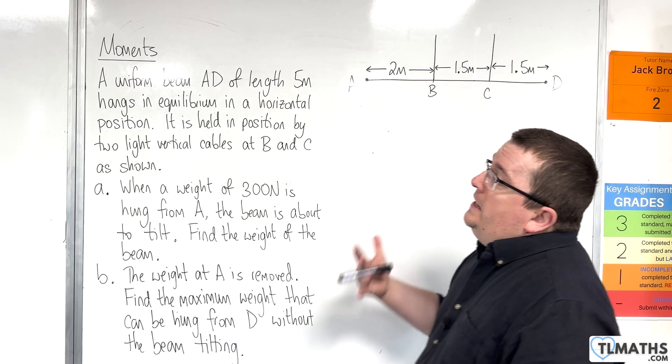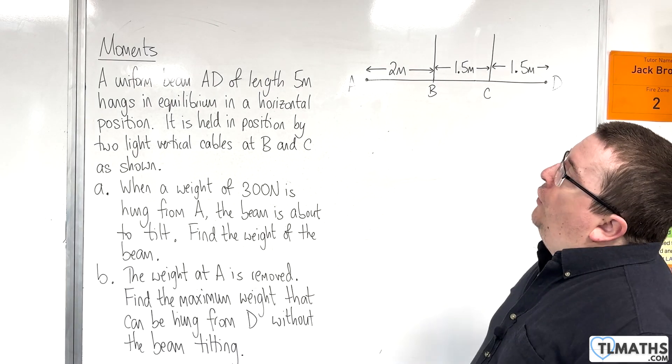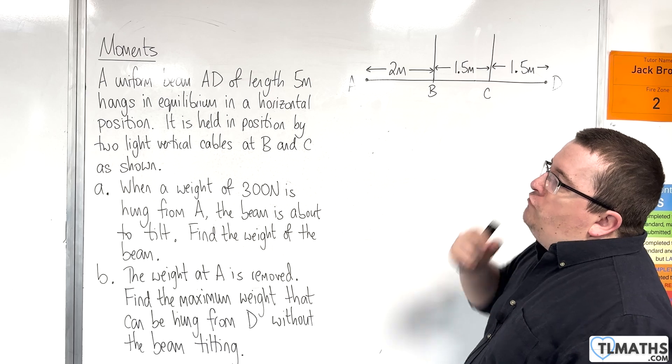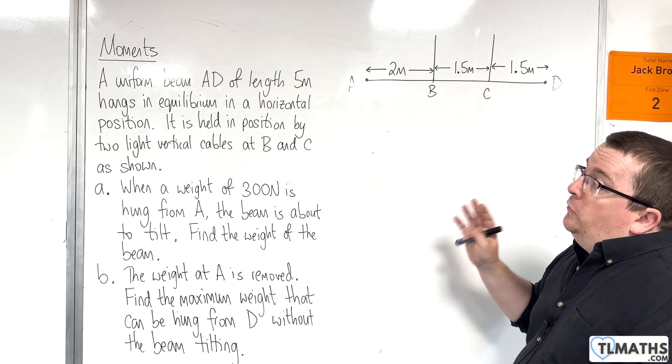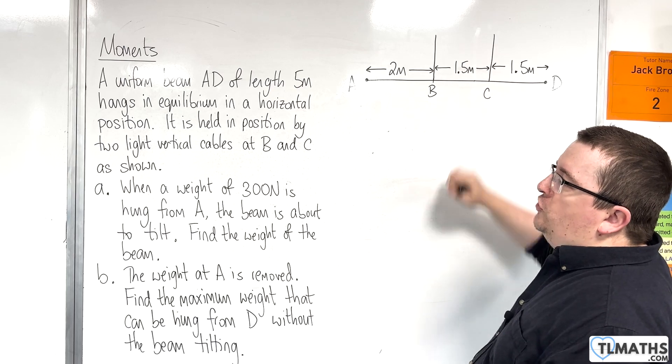So in this video we have a uniform beam AD, so AD there, of length 5 metres, hangs in equilibrium in a horizontal position. It is held in position by two light vertical cables at B and C as shown.